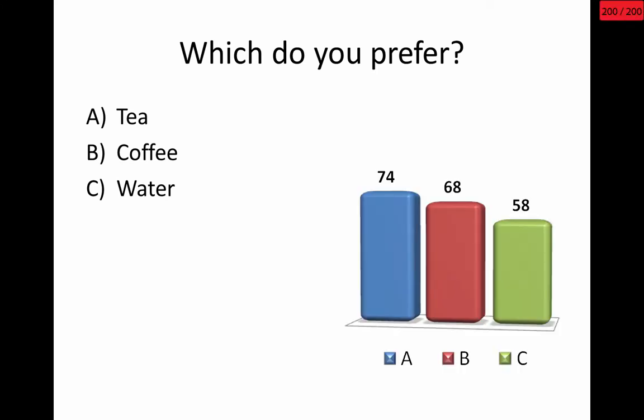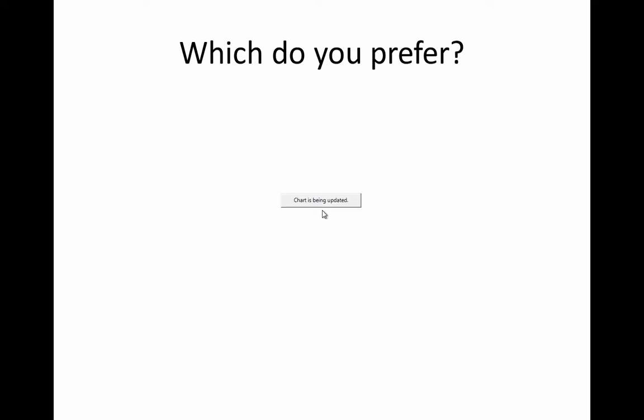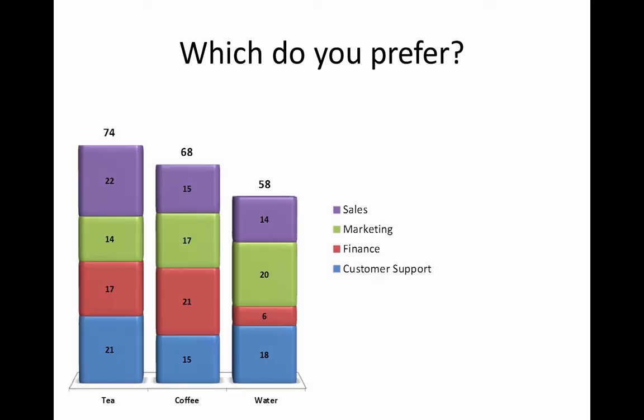Now we can see from this slide that tea is the most popular option with water being the least popular. With normal polling we would stop here. If we click onto the next slide, after a moment Omvia displays a bar chart that shows us how the different team members are spread across the varying drinks preferences.